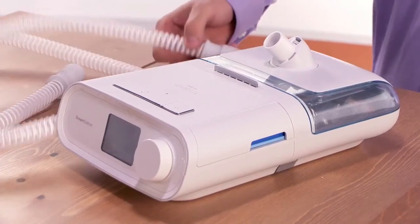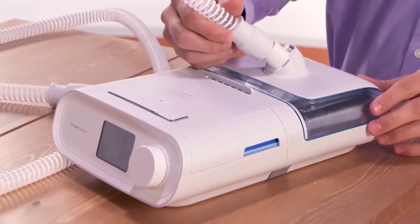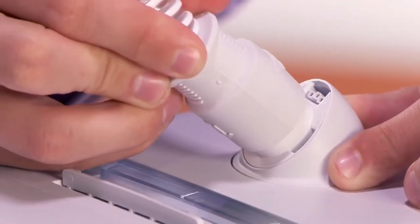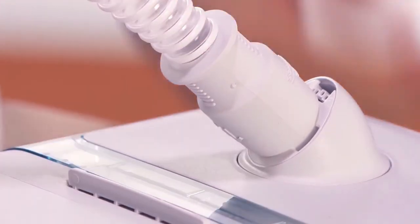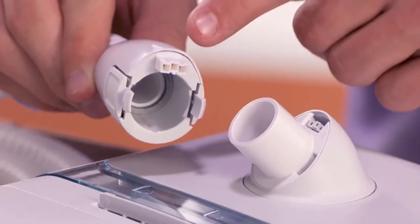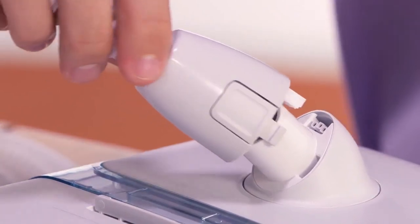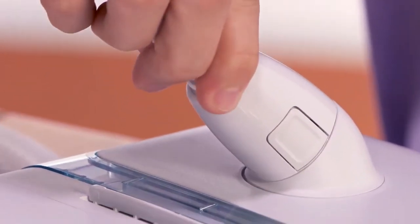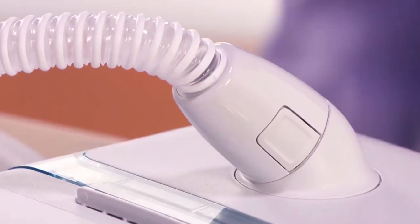To assemble the breathing circuit, connect one end of the flexible tube to the air outlet port. If you are using a heated tube, line its connector up with the top of the air outlet port. Press the heated tube over the air outlet port until the tabs click into the slots.